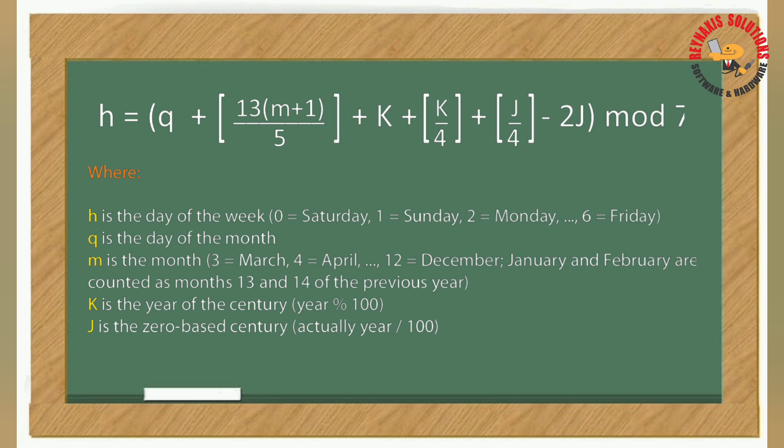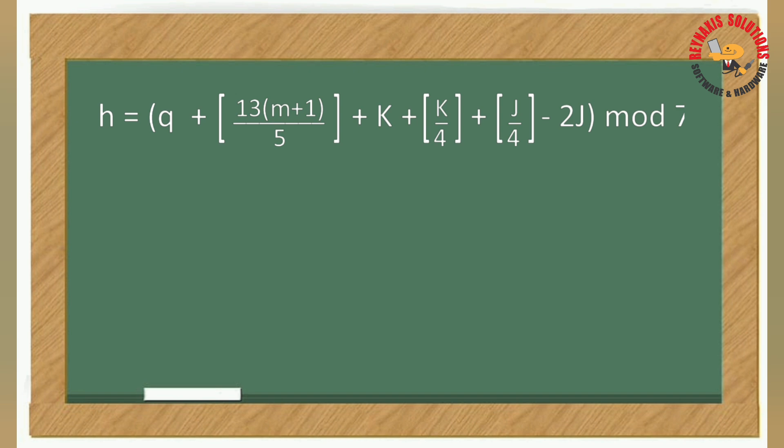One of the rules in this formula is that the letter m or the number corresponding to the month is a bit tricky. We start accounting with the number 3 for March, 4 for April, 12 for December, and up to February where January is 13 while February is 14.